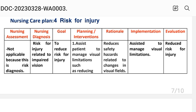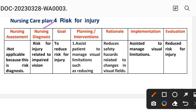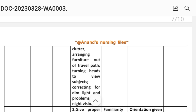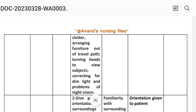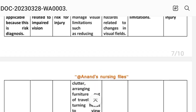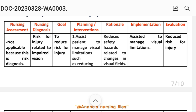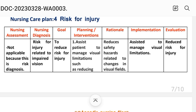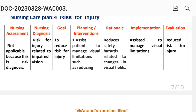Nursing diagnosis: risk for injury related to impaired vision. Goal: to reduce risk for injury. First intervention: assist the patient to manage visual limitations such as reducing clutter, arranging furniture out of the travel path, turning the head to view subjects, and correcting for daylight and problems of night vision. Rationale: reduces safety hazards related to changes in visual field. Implementation: assisted to manage visual limitations. Second intervention: give proper orientation to surroundings. Rationale: familiarity with surroundings decreases the chance of injury.